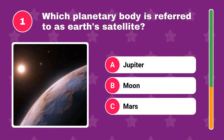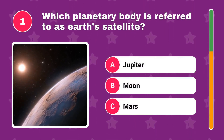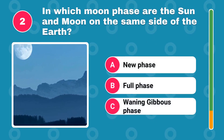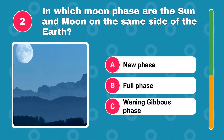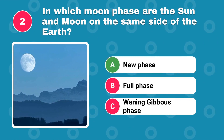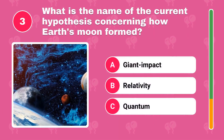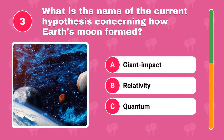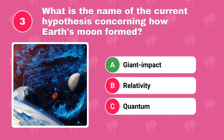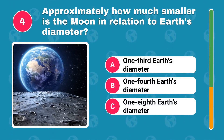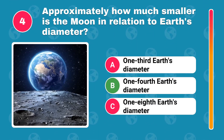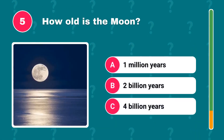Which planetary body is referred to as Earth's satellite? In which moon phase are the Sun and Moon on the same side of the Earth? What is the name of the current hypothesis concerning how Earth's Moon formed? Approximately how much smaller is the Moon in relation to Earth's diameter? How old is the Moon?